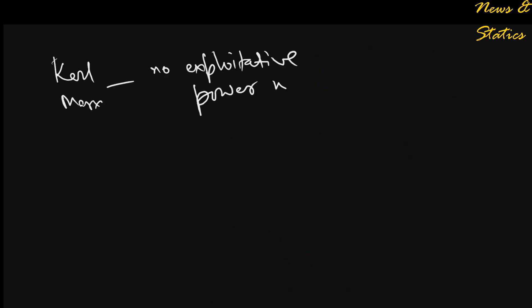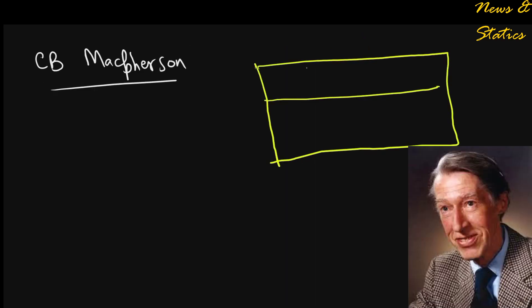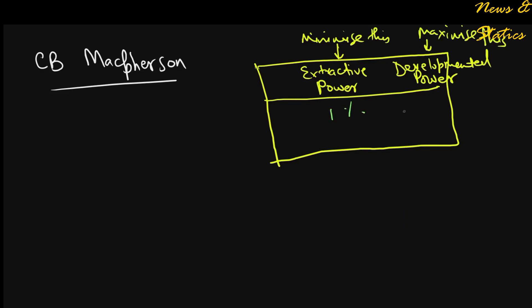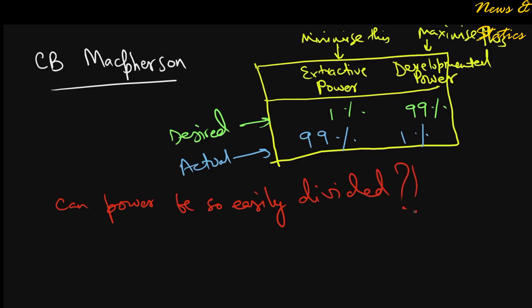Later in the 20th century, a Canadian political thinker C.B. Macpherson would advocate for minimizing extractive power of the state and maximizing the developmental power. But you see, the point which both of them missed is that power cannot be so easily divided into different watertight categories. Wherever there is power, there is misuse of power. And notwithstanding the noble intentions, power corrupts and absolute power corrupts absolutely.